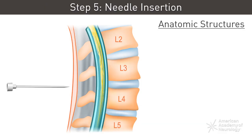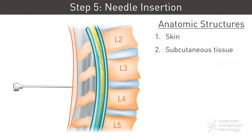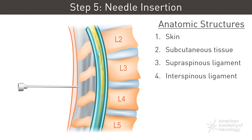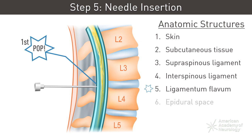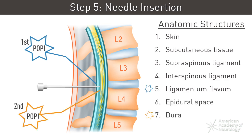Next is needle insertion. The needle is inserted with the bevel oriented parallel to the dural fibers through the anesthetized area, advancing slowly towards the subarachnoid space. The provider must navigate the needle through the skin, subcutaneous tissue, supraspinous ligament, interspinous ligament, ligamentum flavum, epidural space, dura, and finally the arachnoid membrane to reach the CSF in the subarachnoid space.